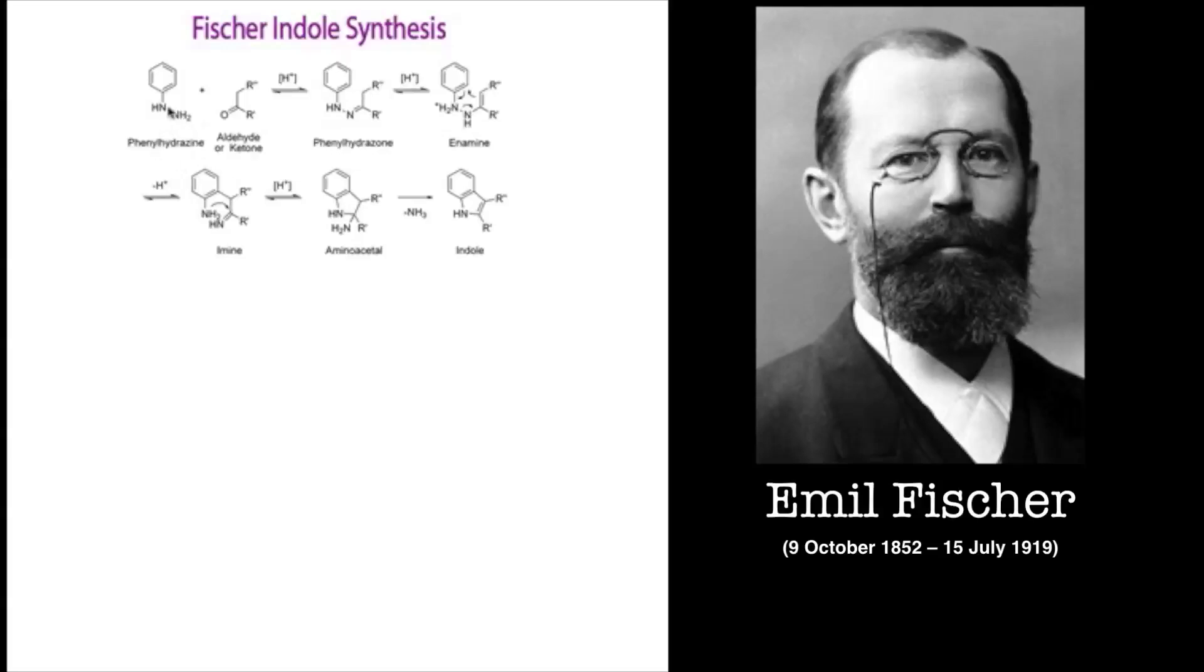Basically you get phenyl hydrazine, this hydrazine unit here, reacted with an aldehyde or ketone to get a condensation product which is a phenyl hydrazone. Phenyl hydrazones usually rearrange to enamines, so the double bond migrates here. When the enamine is formed you get what's called a 3,3-sigmatropic shift which gives this product, now bound to the aromatic or phenyl group. Then you get a condensation reaction to lose ammonia and you get your indole.